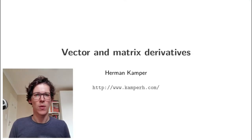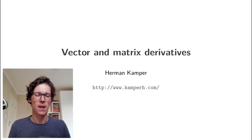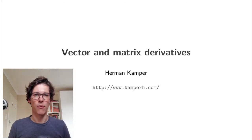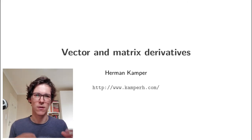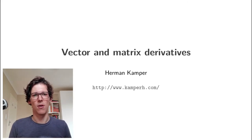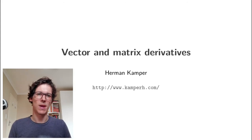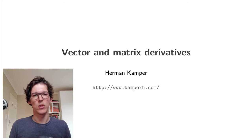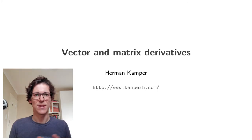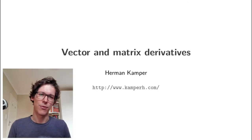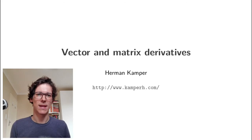We're often in a setting where we want to take the derivatives of a function with respect to several variables. In machine learning, for example, you could have a loss function that you want to differentiate with respect to the parameters, and there might be many parameters. Maybe you can group them all into a single vector. So instead of taking the derivatives one at a time, is there a way to calculate them all together in matrix form? What does it actually mean to take the derivative of a function with respect to a vector? If we could answer that question, that could make our lives a lot easier, and that's what we'll look at in this video.